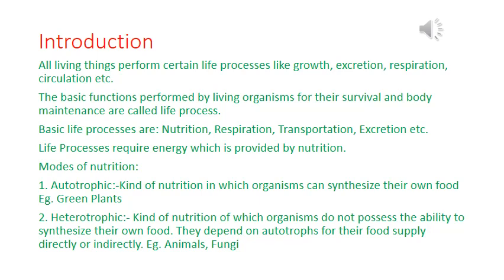Based on quantity, nutrients can be divided into two types: macronutrients and micronutrients. Macronutrients are nutrients required by organisms in large amounts — examples include carbohydrates, water, fat, and protein. Micronutrients are required by organisms in low amounts — examples include mineral salts.